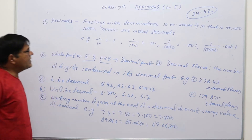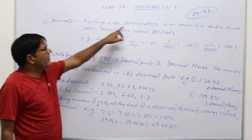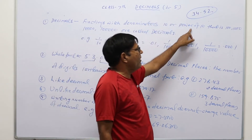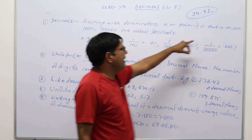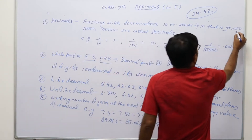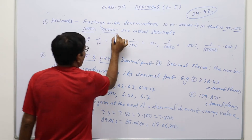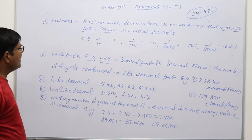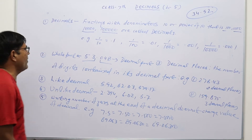So what is a decimal? Fractions with denominators 10 or power of 10 — that is, whether the denominator is 100, 1000, 10000, or 1 lakh — then such fractions are known as decimals.